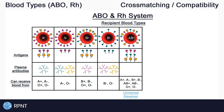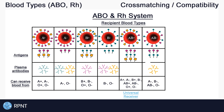Someone with AB positive blood has A antigens, B antigens, and Rh antigens, with no antibodies. They can receive blood from anyone and are considered the universal receivers or recipients. Someone with AB negative blood has A antigens, B antigens, and Rh antibodies. They can receive blood from anyone without Rh antigens, which includes A negative, B negative, AB negative, and O negative.